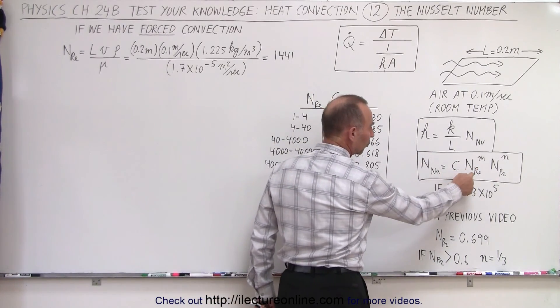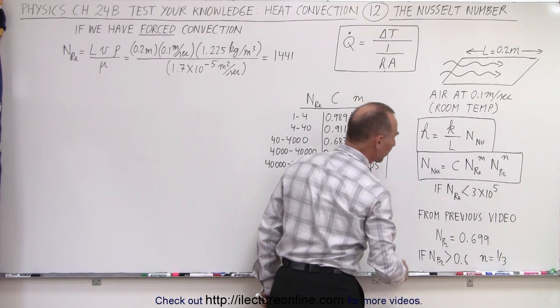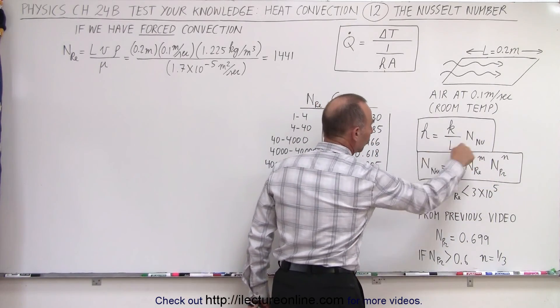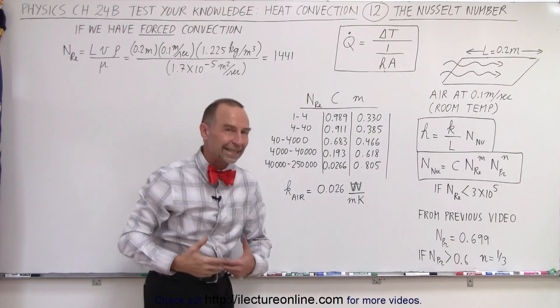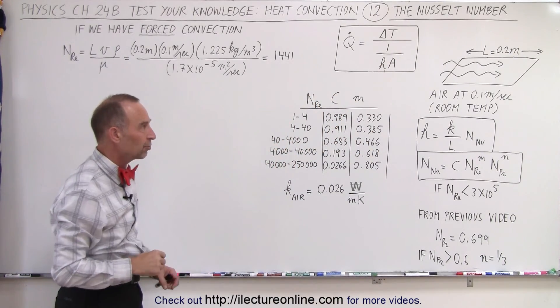Here's the definition of the Nusselt number. It depends on some constant, the Reynolds number, and the Prandtl number. That needs to be fed into this equation to come up with the transfer function which then gets put in this equation to calculate the amount of heat drawn from an object.